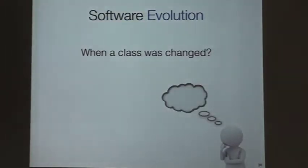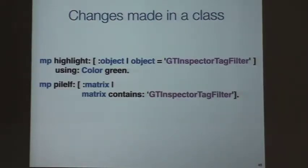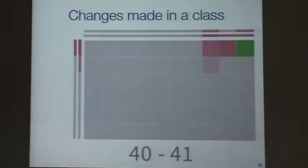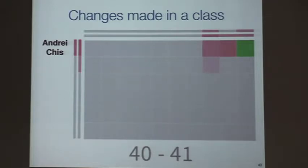When was a class changed? We focus on one of the last classes: JetInspectorTagFilters. We highlight with green and apply the times when JetInspectorTagFilters was modified. Only at range 40 to 41 was it modified. We only see one cell with green. This means only one contributor at all this time modified JetInspectorTagFilters, and this contributor is Andrey Cheese. So if Andrey Cheese never joined the project or went out from the project, this class would have no one to support it. We can see these kinds of things with the visualization.